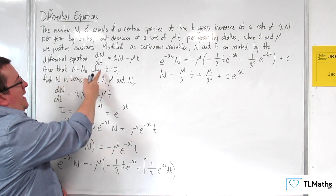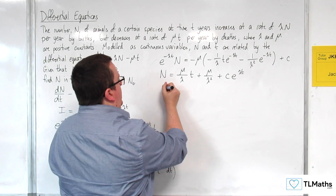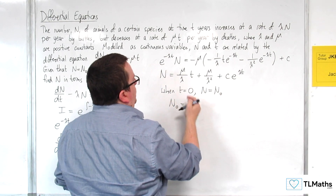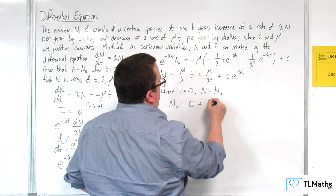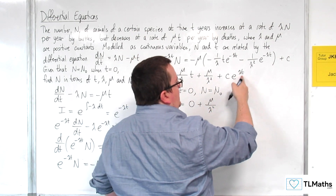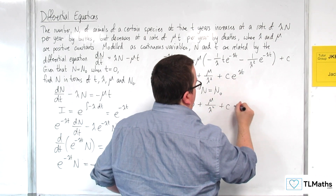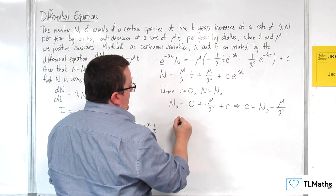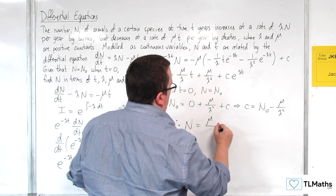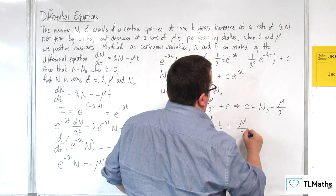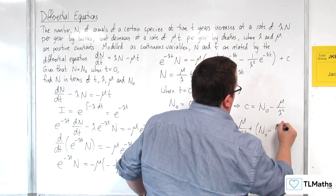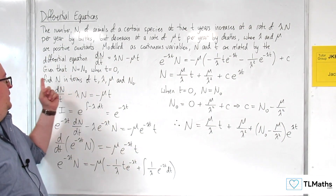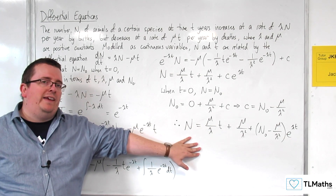Now I apply the initial condition: n = n₀ when t = 0. Substituting t = 0, the (μ/λ)t term becomes 0, and e^(λ·0) = 1, so n₀ = μ/λ² + c. Therefore c = n₀ − μ/λ². Substituting back, n = (μ/λ)t + μ/λ² + (n₀ − μ/λ²)e^(λt). This is n in terms of t, λ, μ, and n₀, as required.